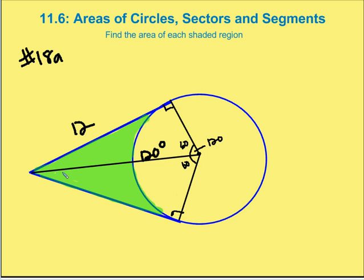I've created two identical 30-60-90 triangles with a tangent length of 12. This is the side opposite the 30-degree angle, and the 12-unit length is the side opposite the 60-degree angle. Since x times √3 equals 12, the side opposite the 30-degree angle is going to be 4√3. So I've bisected the angle giving me 60 and 60 degrees for those two angles.